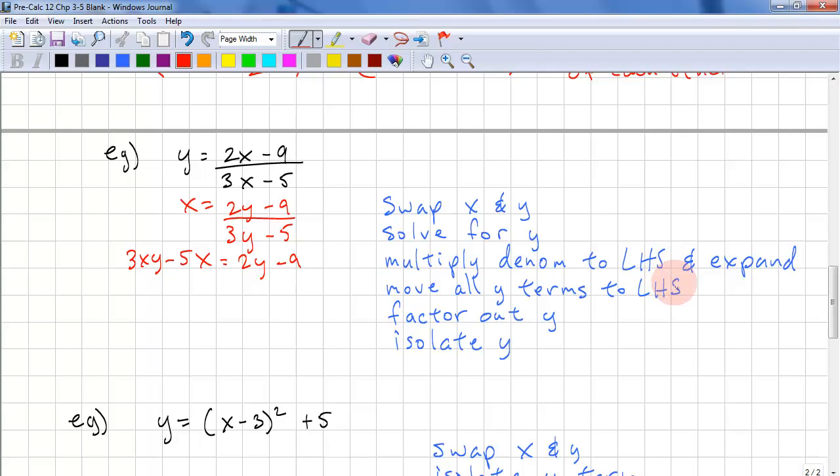So we're multiplying the denominator to the left-hand side and expanding. Now we need to move all the y terms to the left-hand side. 3xy minus 2y. And when we move the x over to the other side, it becomes positive. Now we factor out the y. And we divide both sides by this factor. Okay, so that's all you have to do. This is a rational function, so the inverse is a function.